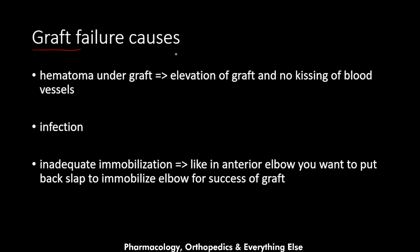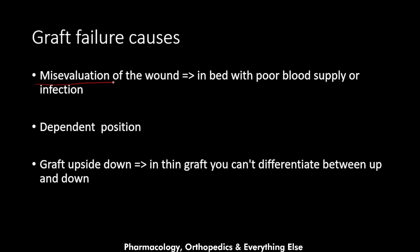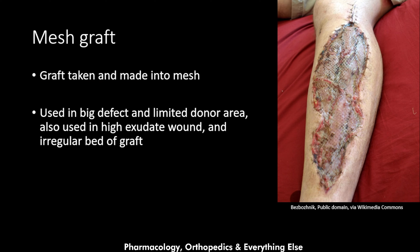Grafts can fail for several reasons. A hematoma under the graft elevates it so that no vascular connection occurs. Infection also causes graft failure, as does inadequate immobilization — for example, the elbow must be stabilized for a graft on the anterior elbow to survive. Other causes include mis-evaluation of a wound bed with poor blood supply or infection, a dependent position, and placing a thin graft upside down.